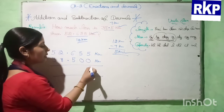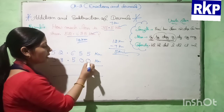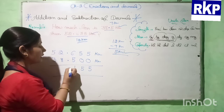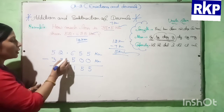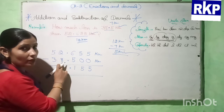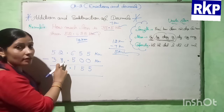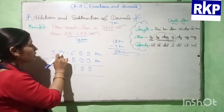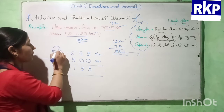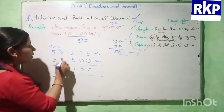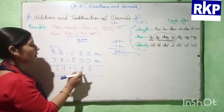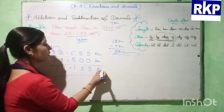Now we subtract. 5 minus 0 is 5, 5 minus 0 is 5, and 6 minus 5 is 1. Then decimal point. Now we have to subtract 8 from 2, but it is not possible because 2 is smaller. So this 2 will borrow from 5, giving us 12 here and 4 left. 12 minus 8 is 4, and 4 minus 3 is 1. So 14.155 kilometers is the answer.